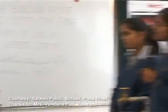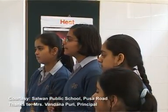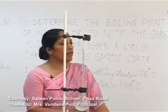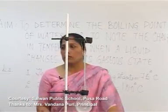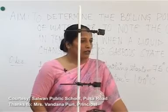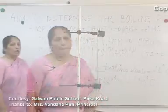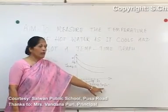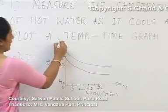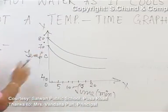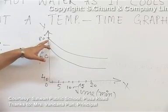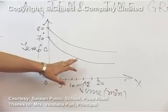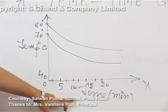Why very fast in the beginning? Because the difference in temperature between the water and the surroundings is greater, so the fall in temperature will be fast. When the difference between the temperature of the water and the surroundings is small, the fall in temperature will be less. After taking the observations, we will plot a graph between temperature and time — time in minutes on the x-axis and temperature in degrees Celsius on the y-axis. This curve represents the cooling curve and the rate of fall in temperature.